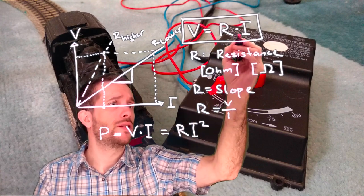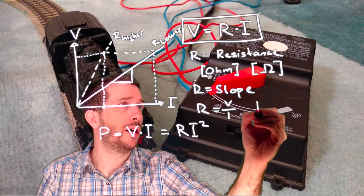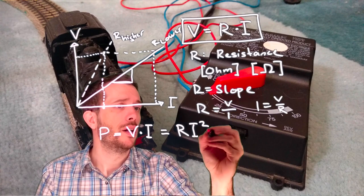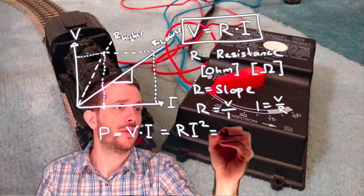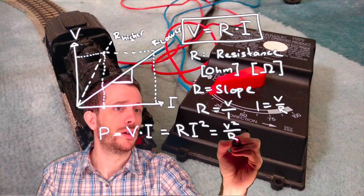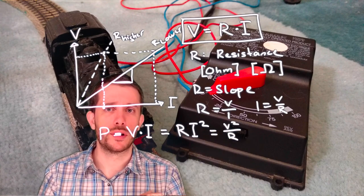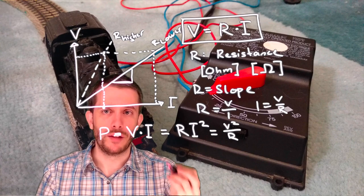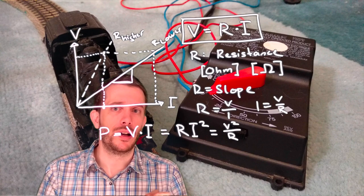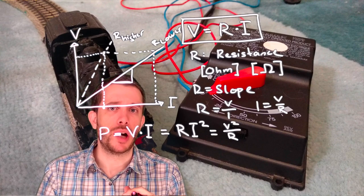Or if I solve this one for I, if I do I, then I get voltage over R. So I could also say we have voltage squared over R. So all three versions of this equation will give us the power output of the device. And then we have to see where this power goes.